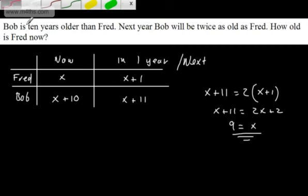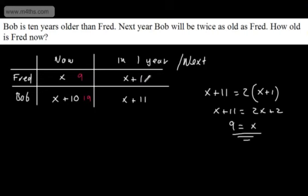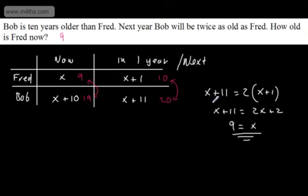That solves the algebra, but we need to answer the question. Fred is now 9 years old. In one year he'll be 10, and Bob will be X plus 11 equals 20 — which is double Fred's age next year. Bob is currently 19, which is 10 more than Fred's current age of 9. This is a linear equation — one unknown, one equation.